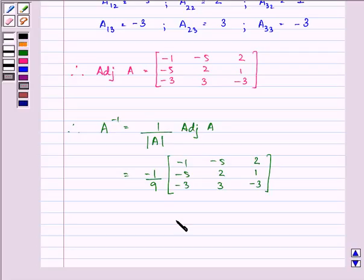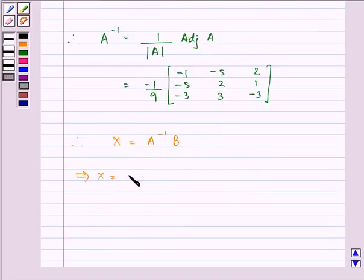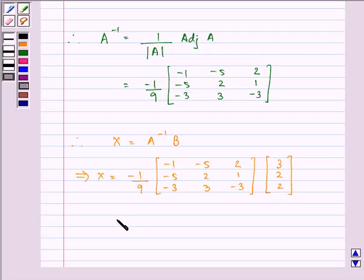Now substituting this value of A inverse—above we had x equals A inverse B—we have x equals minus 1 by 9 times adjoint A times B, that is 3, 2, 2.